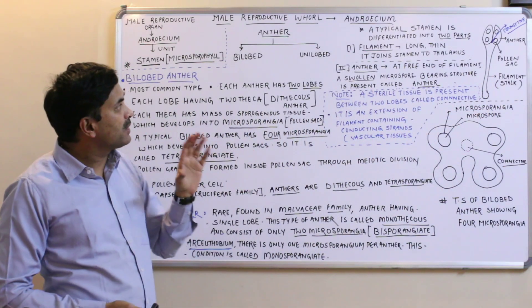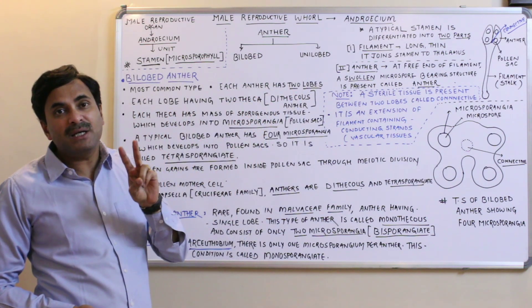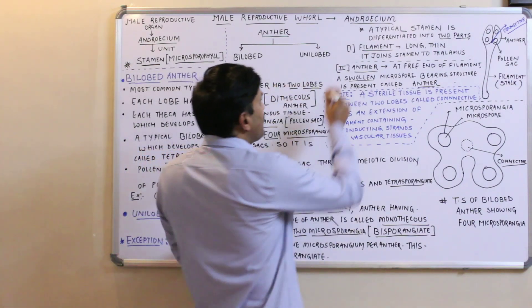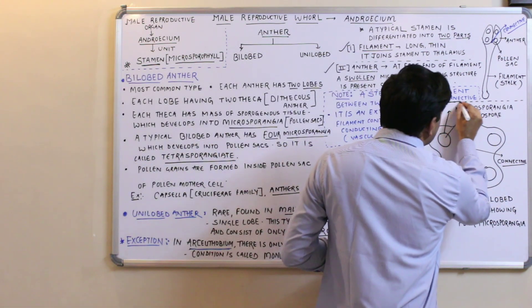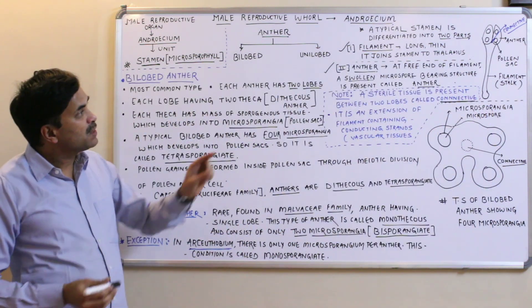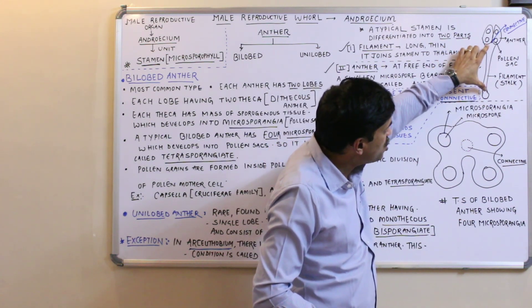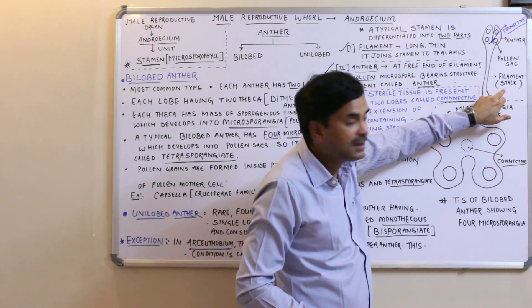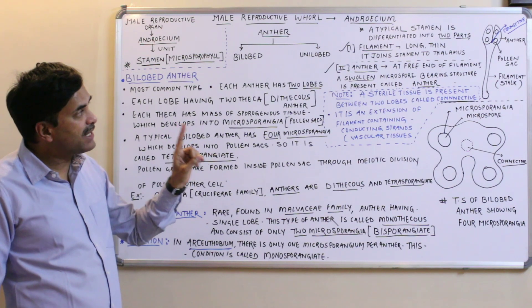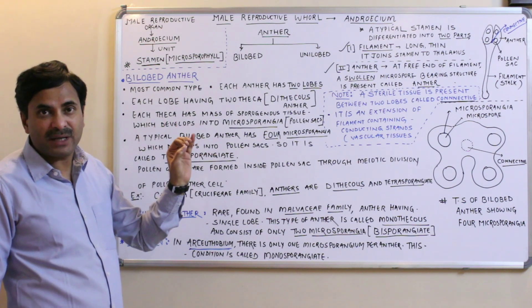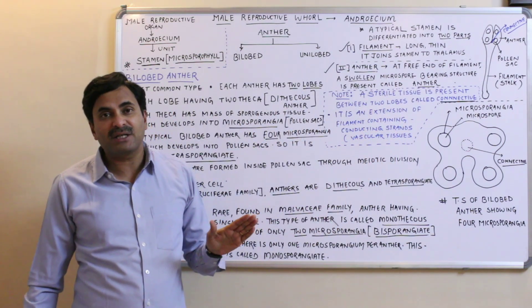A typical stamen is differentiated mainly into two parts: one is the filament, and the other is known as the anther. There is another part also present known as the connective. I have drawn a diagram of a bilobed anther, since the most common type of anther is bilobed.